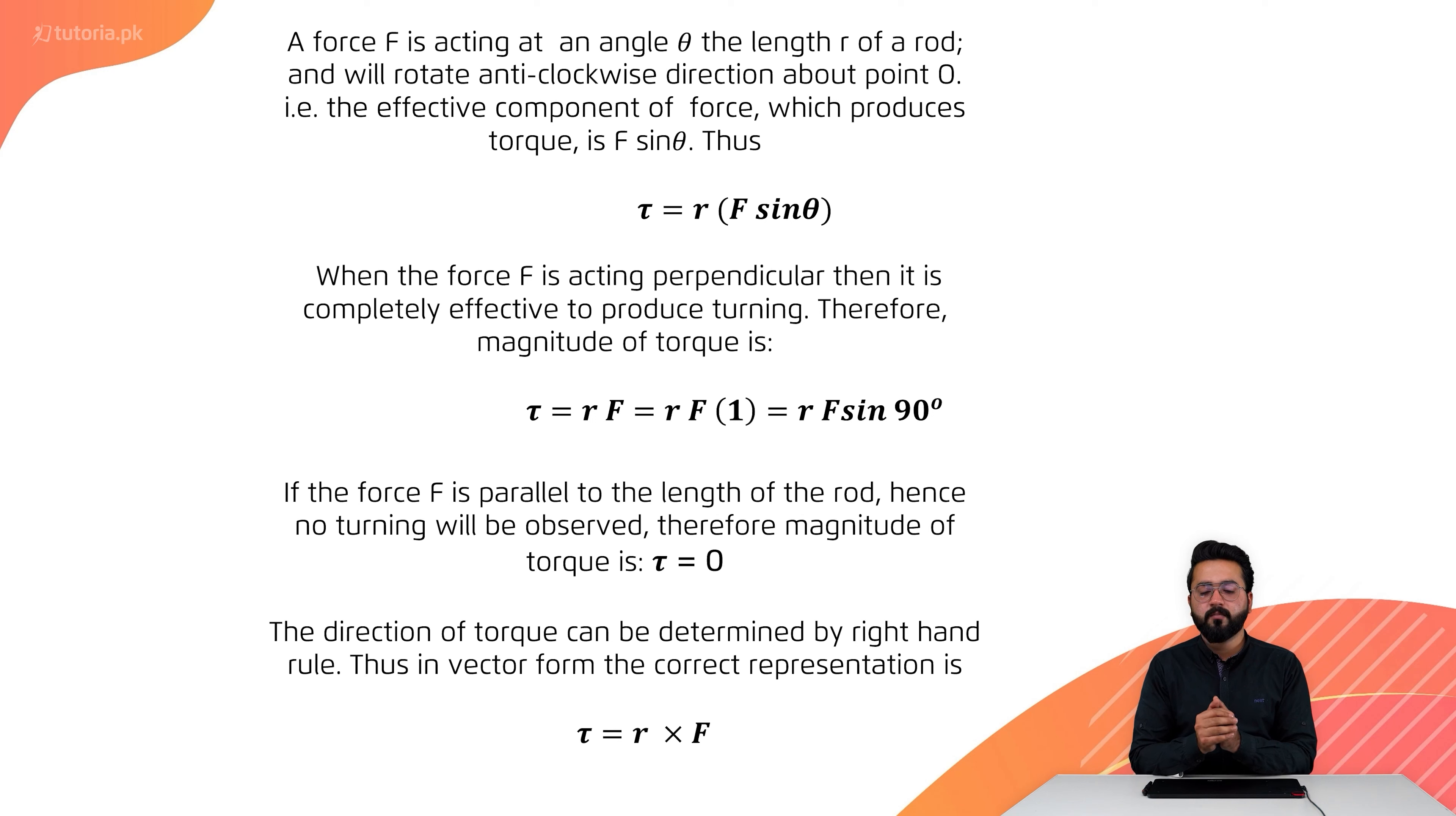The direction of torque can be determined by the right-hand rule. Thus, in vector form, the correct representation is: torque is equal to R cross F, which is a vector product.